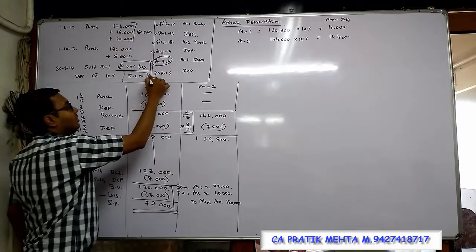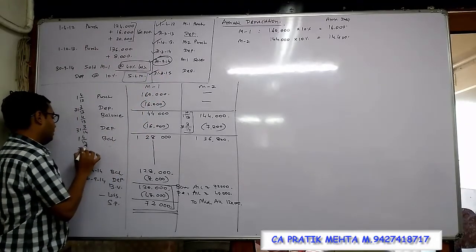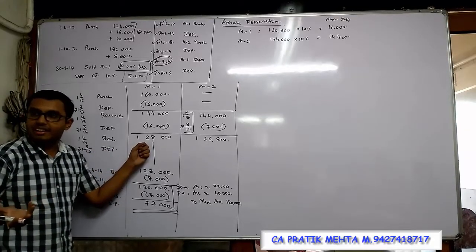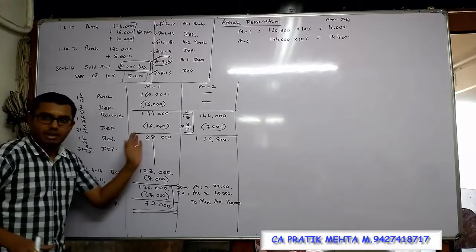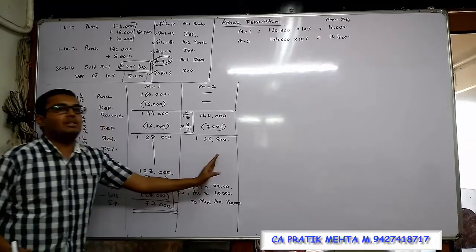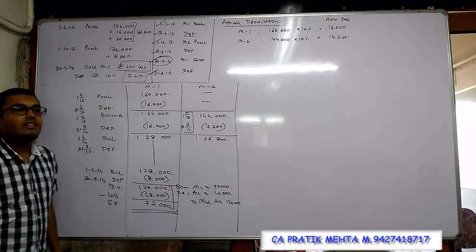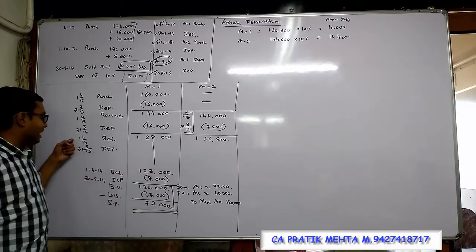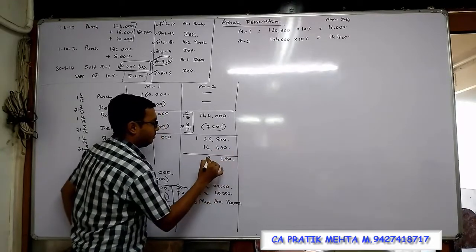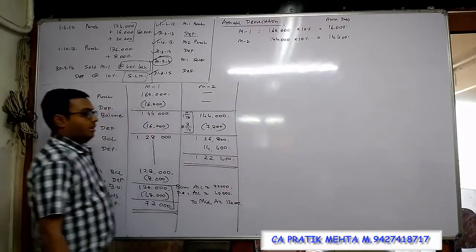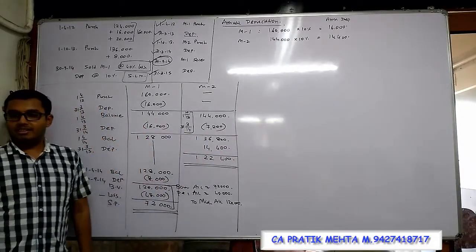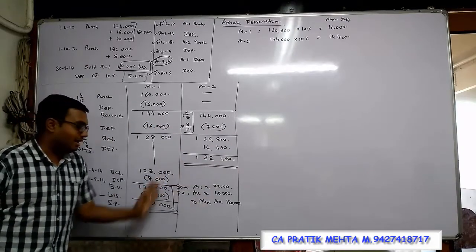Next is what? 31st March 2015. Friends please verify. This machine is not there, so depreciation has no question. Can you tell me its annual depreciation? 14,400. And now it's full year, starting to end full year. So 14,400 is the depreciation. This balance will come in final machinery account. Because only this one machine is left, this balance should go. The other one is sold.